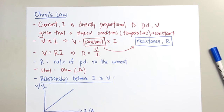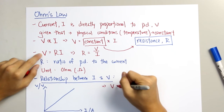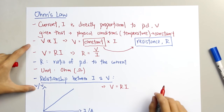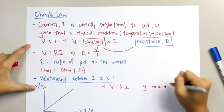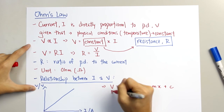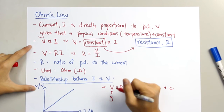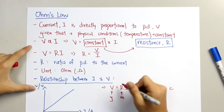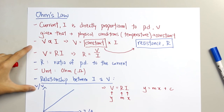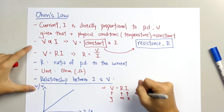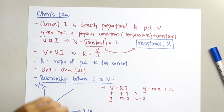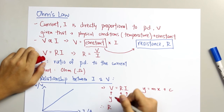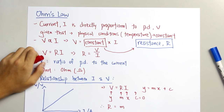From the formula V equals R times I, we compare it with the linear equation Y equals Mx plus C, where Y is represented by V, the gradient is represented by R, and X is I. Since the line cuts through the origin, C equals 0. So we can conclude that R is equal to the gradient of the graph.